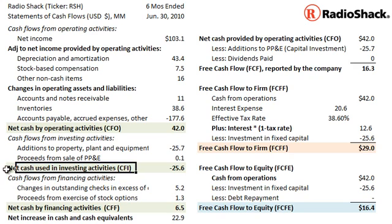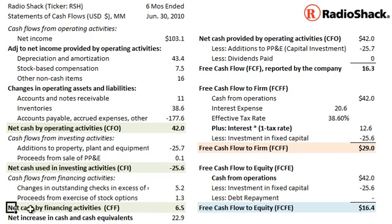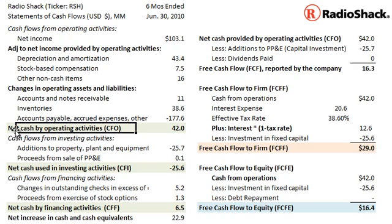The second bucket is net cash used in investing activities, which we can abbreviate CFI — cash from investments. These are cash flows related to the purchase and sale of long-term assets, such as plant, property, and equipment. The final bucket is net cash provided by financing activities, or cash flow from financing. These are cash flows related to the company's capital structure. So those are the three buckets.